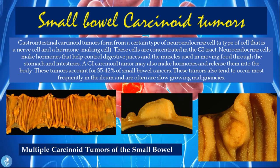Gastrointestinal carcinoid tumors form from a certain type of neuroendocrine cell — a cell that is both a nerve cell and a hormone-making cell. These cells are concentrated in the GI tract. Neuroendocrine cells make hormones that help control digestive juices and muscles used in moving food through the stomach and intestines. A GI carcinoid tumor may also make and release hormones into the body. These tumors account for about 35 to 42 percent of small bowel cancers and tend to occur most frequently in the ileum, and are often slow-growing malignancies.